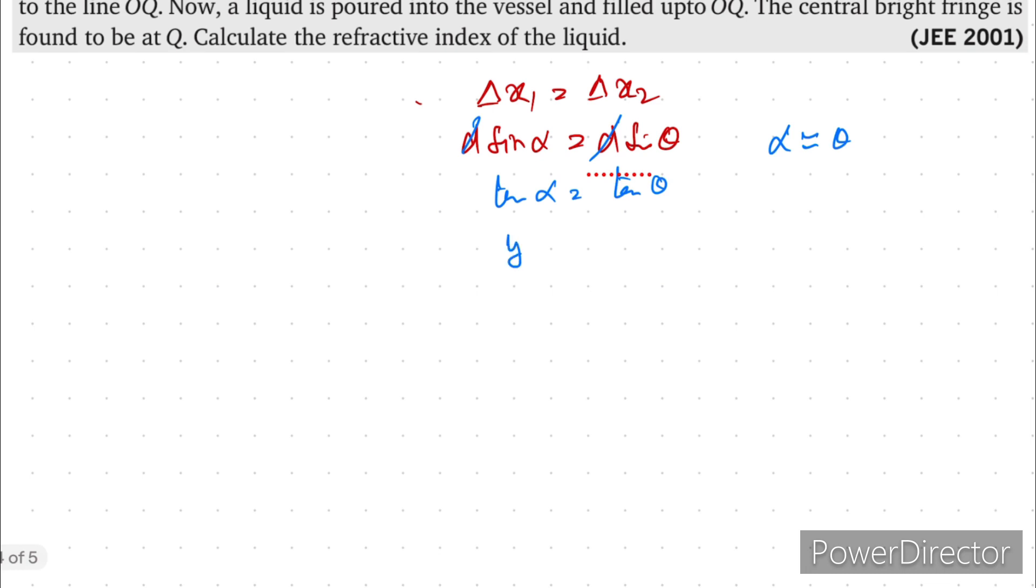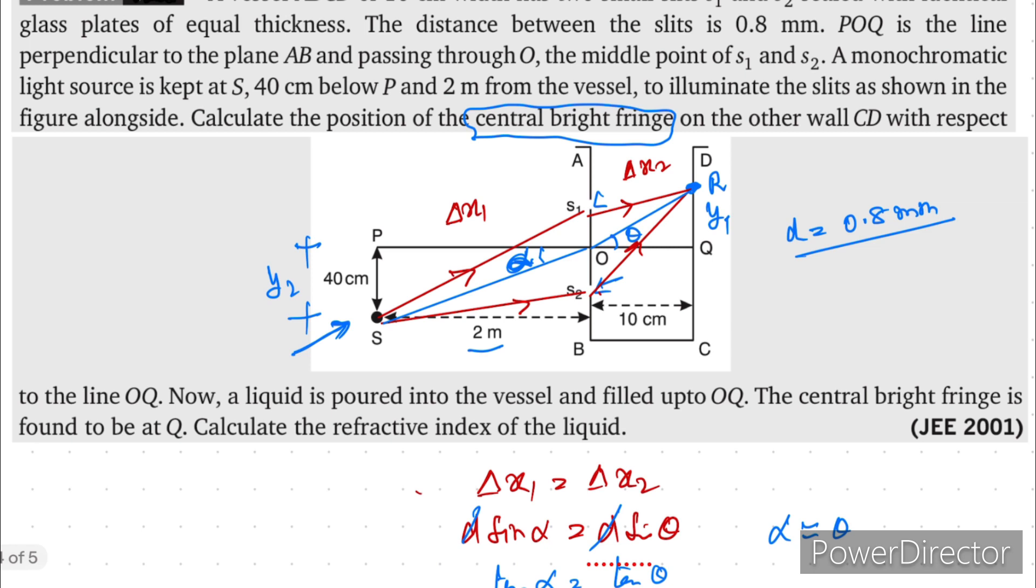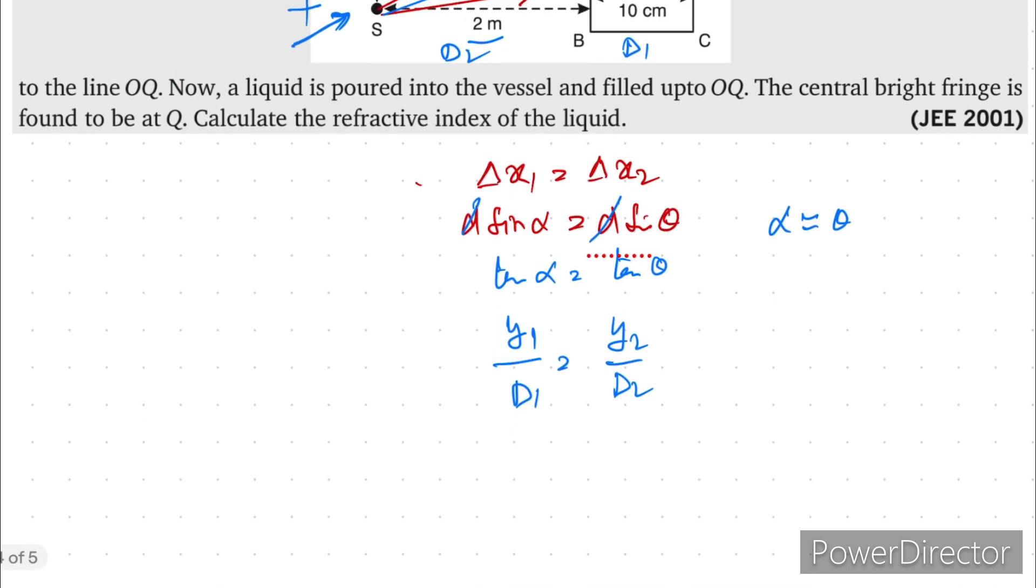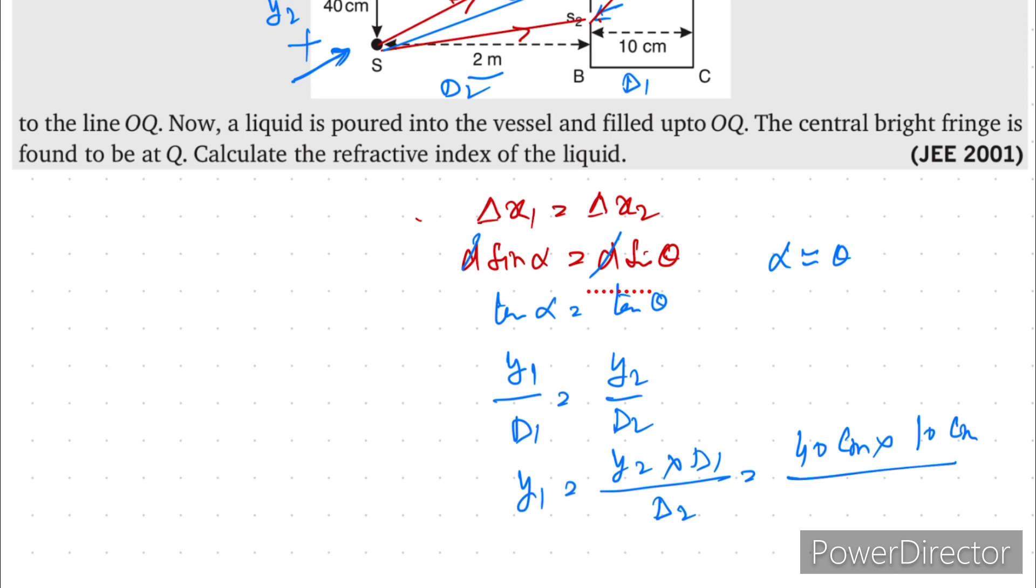That means y1 upon d1 is equal to y2 upon d2. What is y1 and y2 we know, this is your d1 and this is your d2. That means y1 we have to find out, y1 will be equal to y2 into d1 upon d2. That means y2 is nothing but given as 40 centimeter, d1 is given as 10 centimeter and d2 is nothing but 2 meter. That means 2 meter means 200 centimeter. So this will come as 2 centimeter.